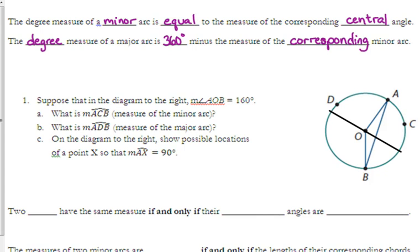The degree measure of a major arc is 360 degrees minus the measure of the corresponding minor arc. If you know the minor arc, you just take it away from 360 degrees because there are 360 degrees in a circle. So let's look at this diagram, same picture from before, but we're actually going to put some measures on it.